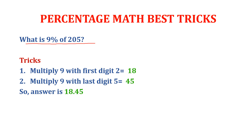Then multiply 9 with the last digit 5, that will be 45. So your answer will be 18.45.